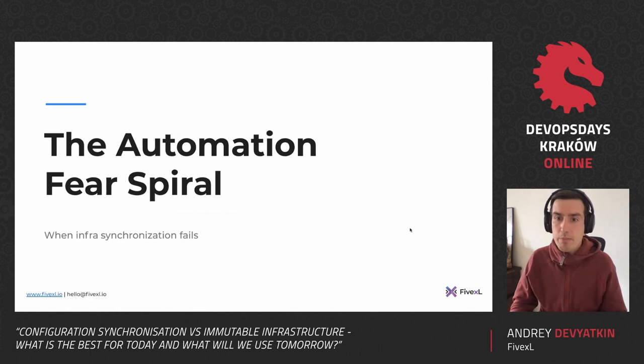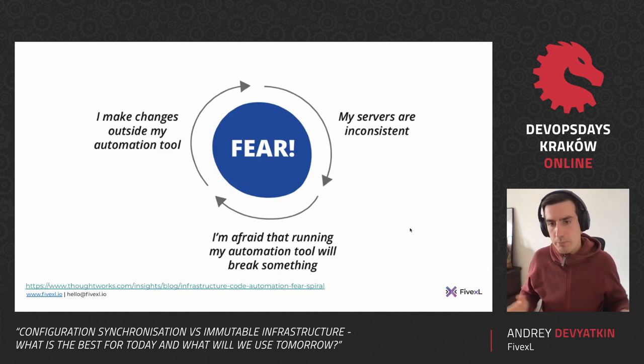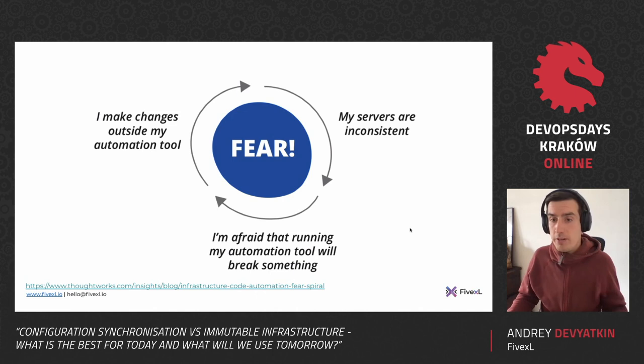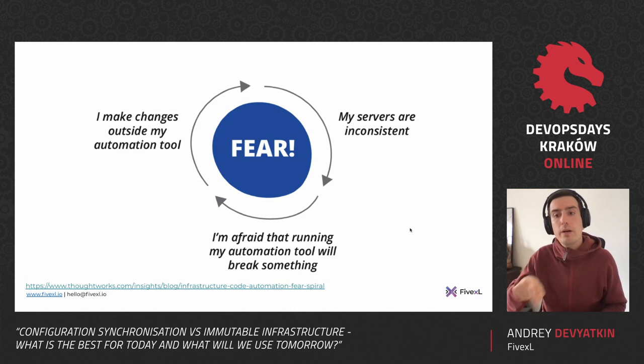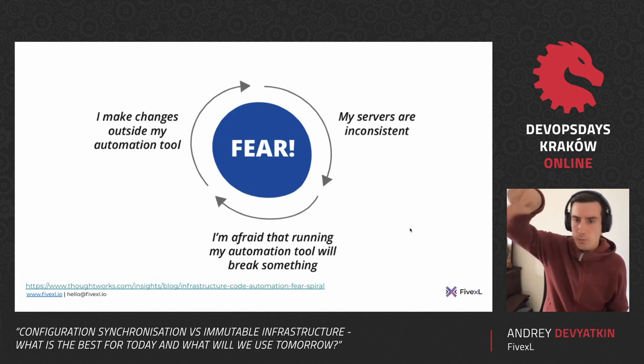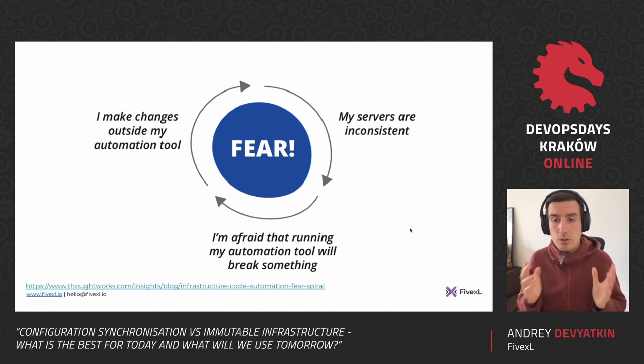Thus we might get ourselves into the automation fear spiral. It works like this: you have a production incident, you log into the server and change something by hand, the server becomes inconsistent with your specification, but then you're afraid to run your configuration synchronization tool because you're afraid it will break the server. Now you have a loop — the next change you do by hand, making things even more inconsistent, spiraling down to the snowflake server state.